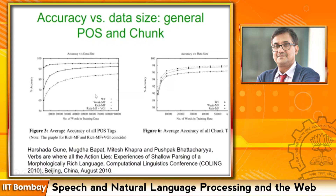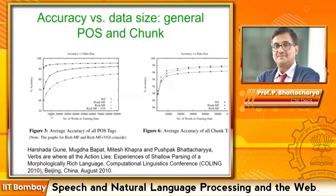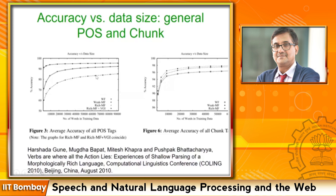This shows the accuracy versus data size for general part of speech tagging and chunking. The left curve is part of speech tagging — training data starts at 10,000 and goes up to about one lakh words. The accuracy keeps increasing but flattens after some time. NLP students should remember: accuracy saturates after some time. This is the law of diminishing returns. If you pump in more and more resources, the return on investment does not grow linearly — it flattens out.